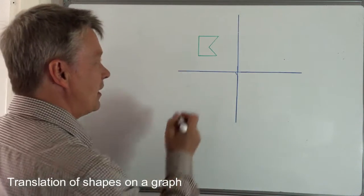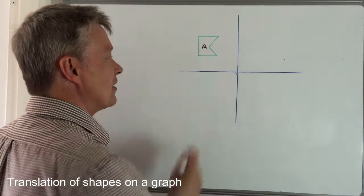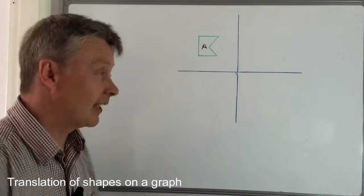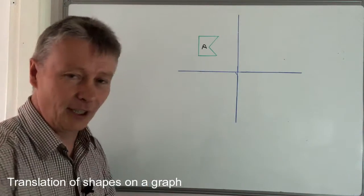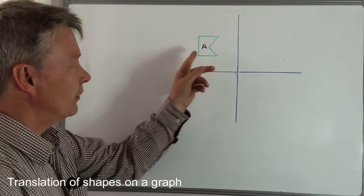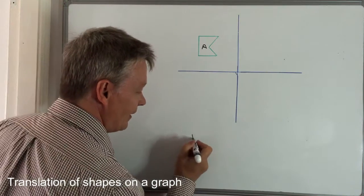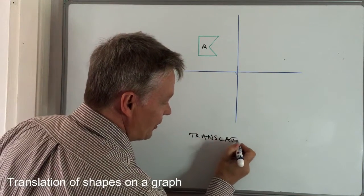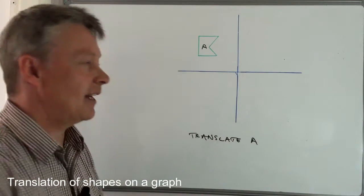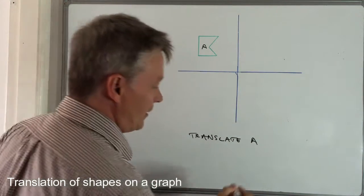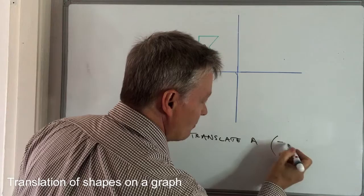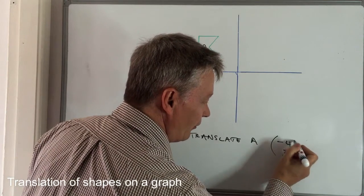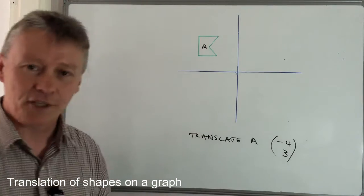This is shape A - it's a slightly awkward shape and they do that quite deliberately to make it a little bit trickier. They want you to translate shape A, and they're going to give you a vector. Let's say this is going to be minus four and three, so minus four, three.